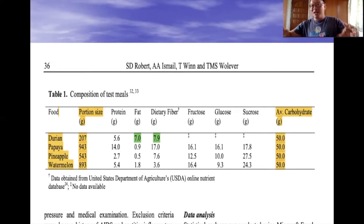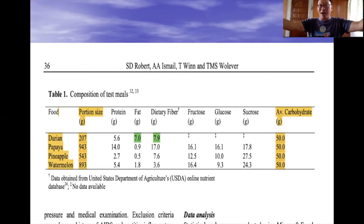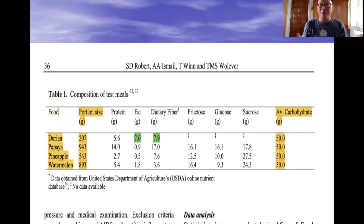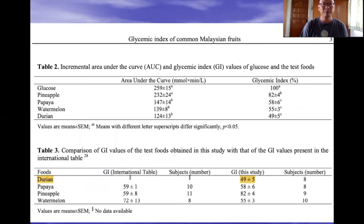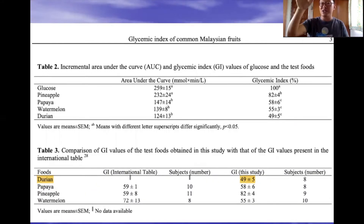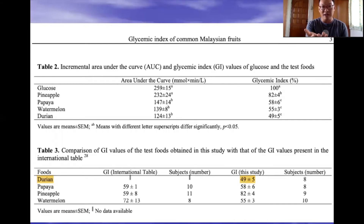Then the following day, the same thing with papaya; the subsequent day, pineapple; and the final day the 10 volunteers consumed 893 grams of watermelon — again equivalent to 50 grams of carbohydrates. As you can see in the top chart, the area under the curve is measured with glucose as the baseline, giving it a GI index of 100. Pineapple scored 82, papaya 58, watermelon 55, and durian 49.